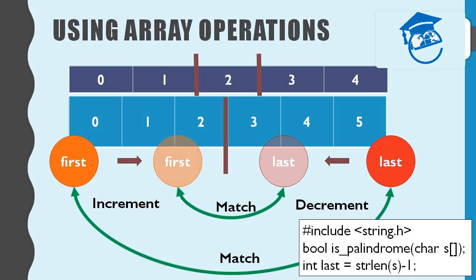Now we move to the second technique using array operations. The logic is mostly the same as before, but we need to change three things in the code: we import the library string.h instead, we pass a char type array instead of a string, and to obtain the length we call strlen with the character array as argument. With strlen minus one we get the last index position. By changing these three lines, we get a complete program for our requirement.